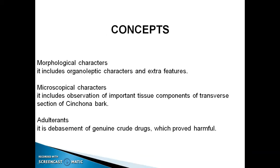Morphological Characters include organoleptic characters and extra features. Microscopical Characters include observation of important tissue components of the transverse section of Cinchona Bark. Adulterants refer to the debasement of genuine crude drugs with proved harmful substances.